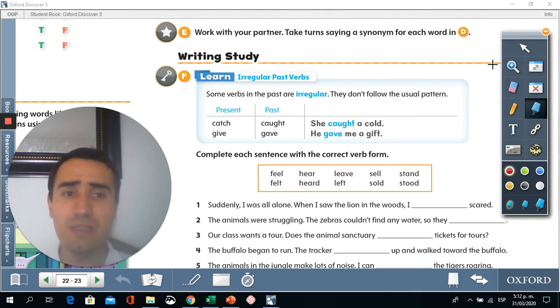Let's read the description we have here. Some verbs in the past are irregular. They don't follow the usual pattern. They don't use ED or you don't only add ED or D at the end. No, they are different.